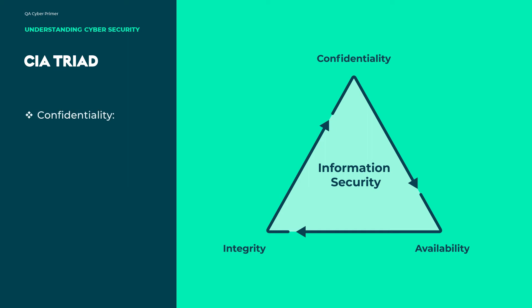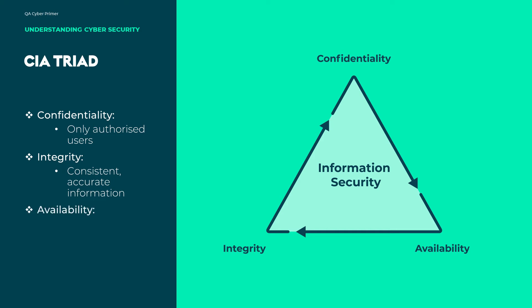By confidentiality we mean that information is only available to authorised users. Integrity is maintaining the consistency, accuracy, and trustworthiness of the information. Availability is about information being available when required. These three areas together form the CIA triad and cover all forms of information systems, be they mobile devices, USB media, desktops, or even paper media.